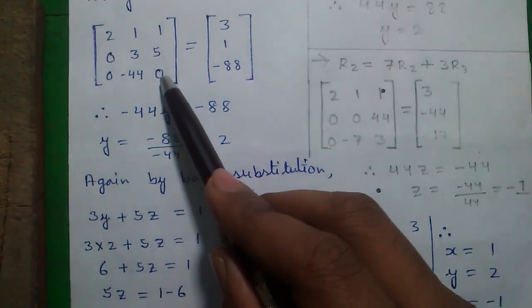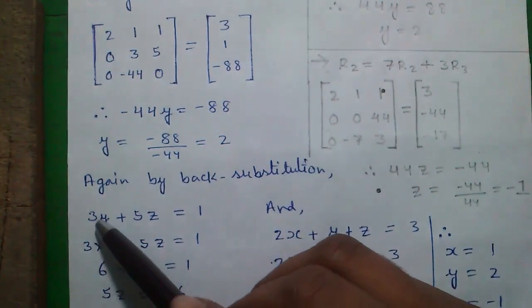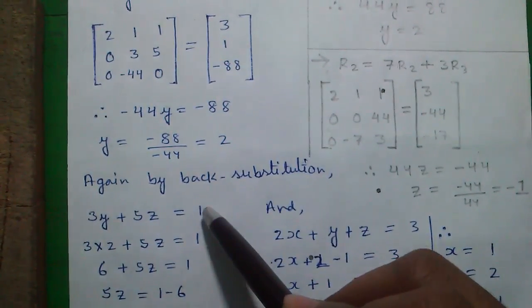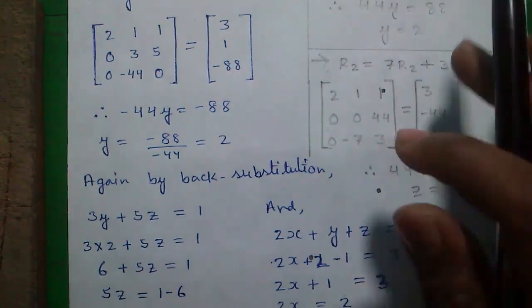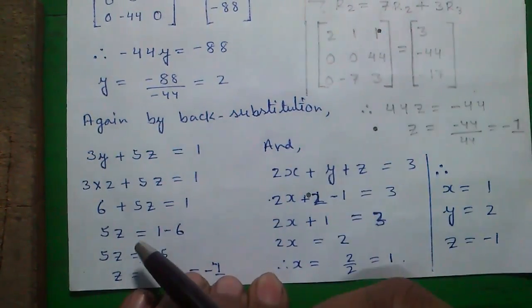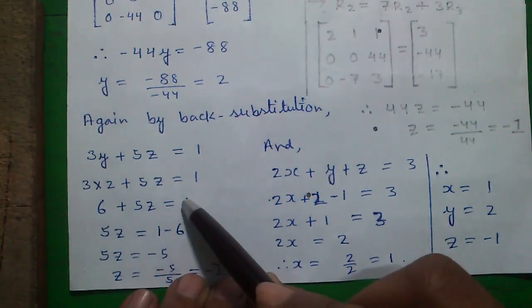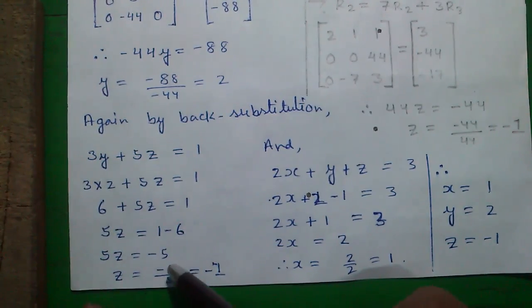And we can put our obtained Y value in this equation. So 3Y plus 5Z equals to 1. In place of Y, we can now put 2, so 3 into 2 plus 5Z equals to 1, so 6 plus 5Z equals to 1, so 5Z equals to 1 minus 6, which is minus 5. So Z equals to minus 5 divided by 5 equals to minus 1.